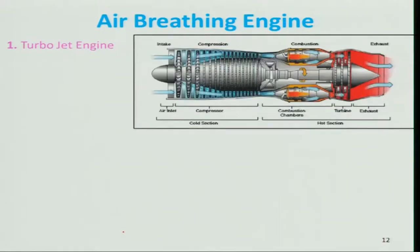Let us look at the turbo-jet engine and what is really happening. The turbo-jet engine has various components: air intake, compressor (axial compression is preferred nowadays, though centrifugal compressors exist and are used in some turbo-prop engines), combustion chamber where the fuel is burned with minimal pressure loss, and a turbine where high-temperature, high-pressure gas is expanded.